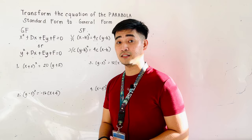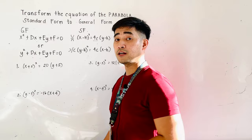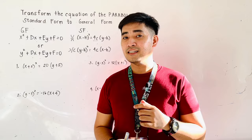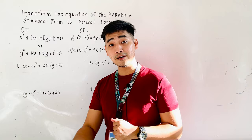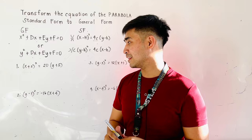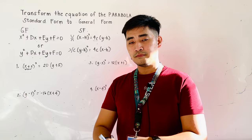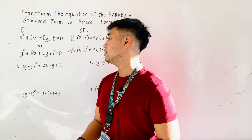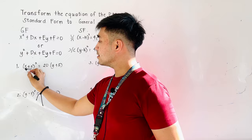We are given here the standard form and we're asked to transform this into general form. Just like what we have done in transforming the equation of the circle, if we are given x plus 2 quantity squared and it contains an exponent, we need to expand. So let's expand x plus 2 quantity squared. This becomes x times x, which is x squared.